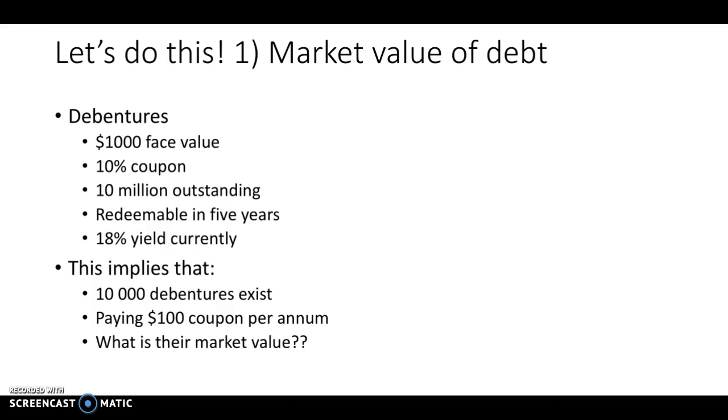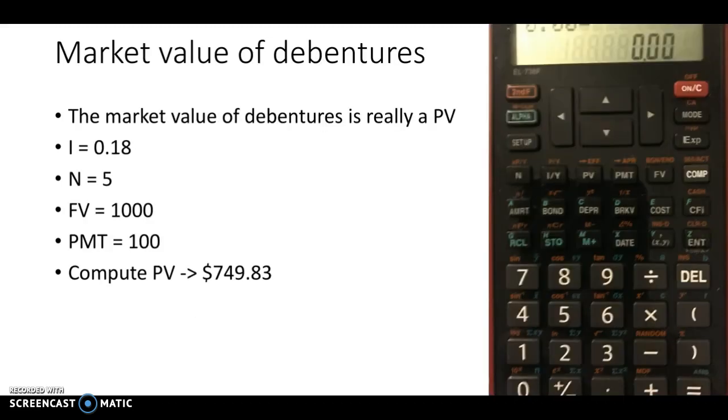For debentures, they are $1,000 face value, there's a 10% coupon, 10 million outstanding, redeemable in five years, and 18% yield currently. So that implies that 10,000 debentures exist paying $100 coupon per annum. So what's their market value?